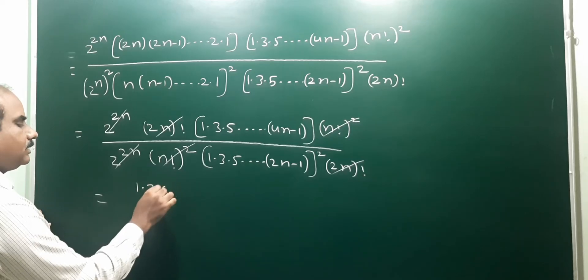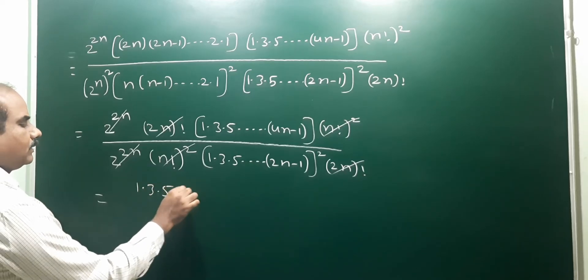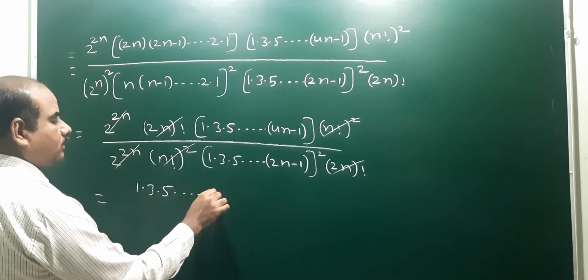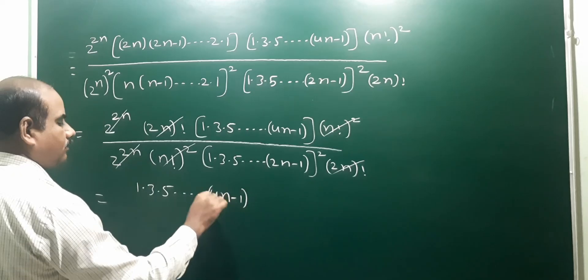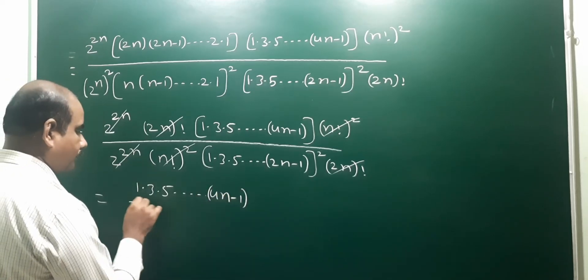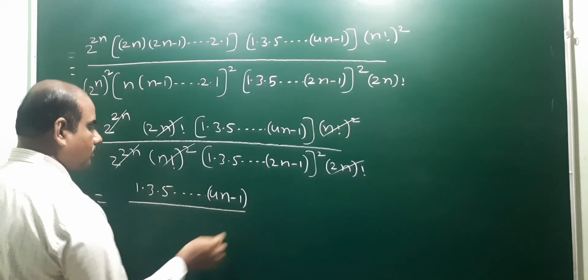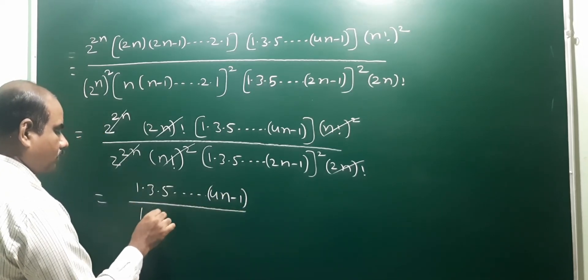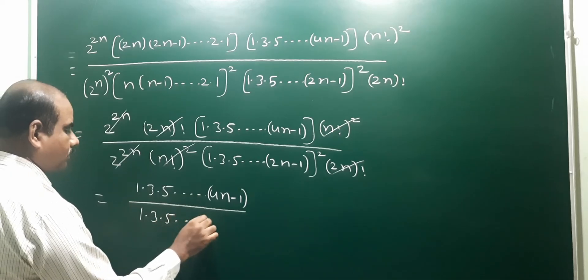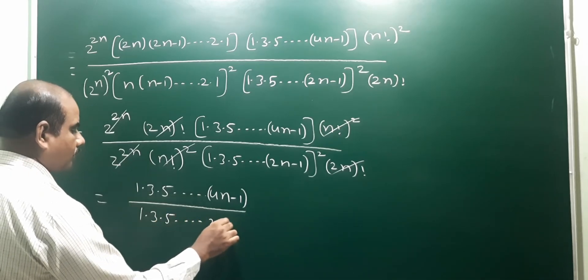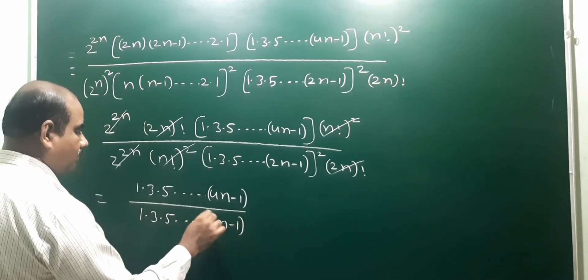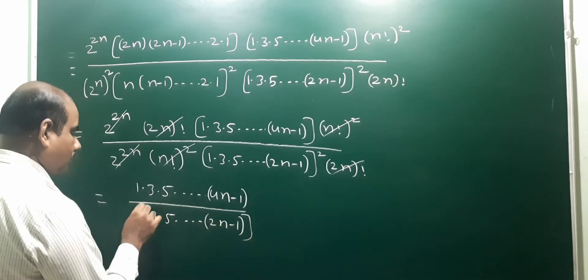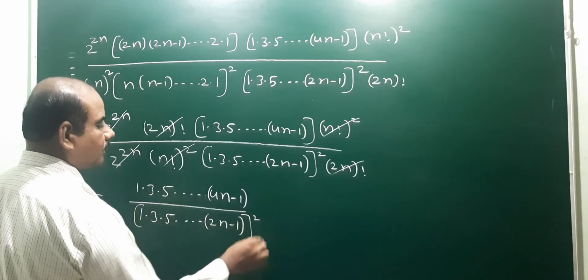The remaining expression is exactly our RHS: (1·3·5···(4n-1)) / (1·3·5···(2n-1))². This matches the RHS, so the proof is complete — LHS equals RHS, which is our answer.